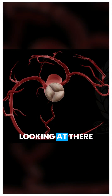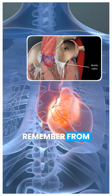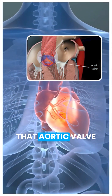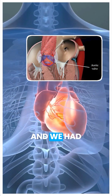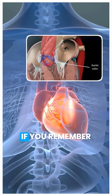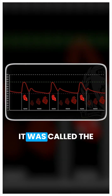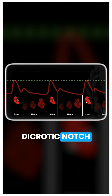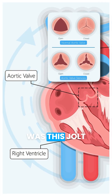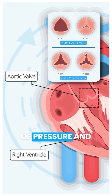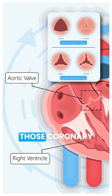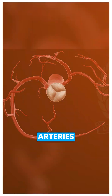What you're looking at there is the aortic valve. And if you remember from cardiac A&P1, that aortic valve slammed shut and we had this water hammer effect. If you remember looking at the arterial line tracing, it was called the dicrotic notch, where that aortic valve closed and then there was this jolt of pressure, and it increased the flow into those coronary arteries.